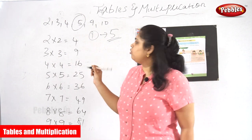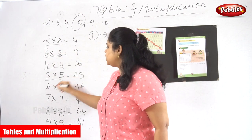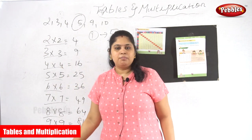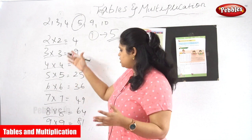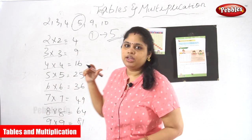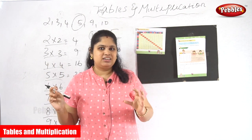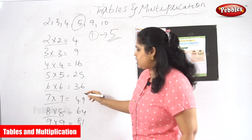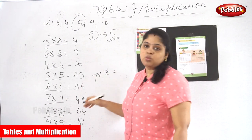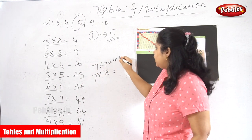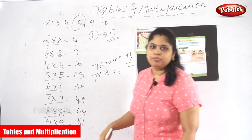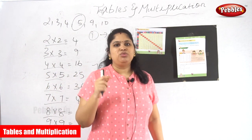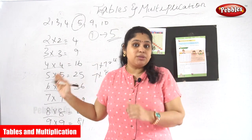Tip one: recollect the forgotten number through the 5 table. Tip two: remember the same-number combination series — 2 into 2, 3 into 3, 4 into 4 and so on. If you forget 7 into 8, you know 7 into 7 is 49; add 49 plus 7 and you get the answer. This is a safety backup — at any point if you are nervous and forget, it will be helpful.